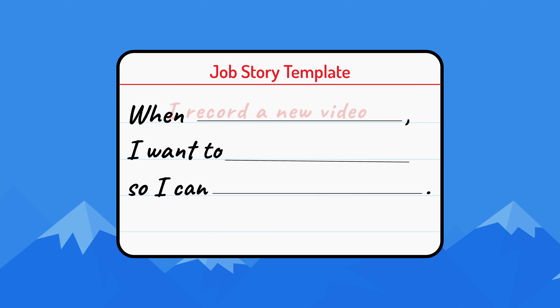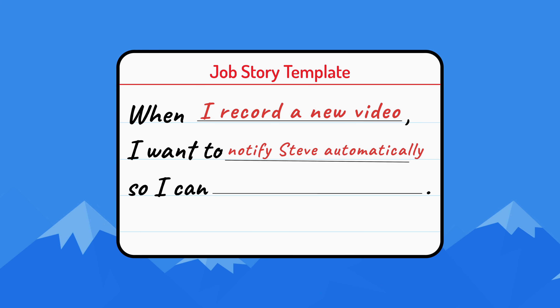As an example, I work with a video editor, Steve, to create these videos — in case you're wondering, that's me. When I record a new video, I want Steve to be notified automatically so that I can add the video to YouTube without delay. My ultimate goal is to post new videos to YouTube soon after I record them. I don't really care about Steve getting a notification, but that's the middle part of the story template — the motivation — because it's how I think I can post a video more quickly.